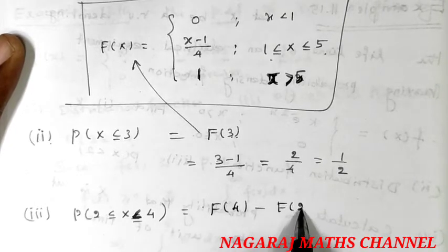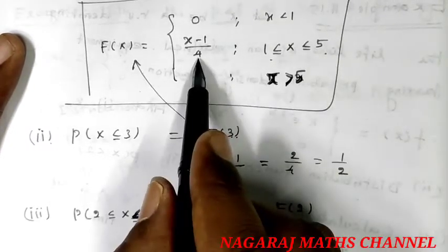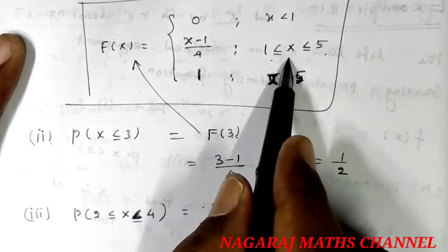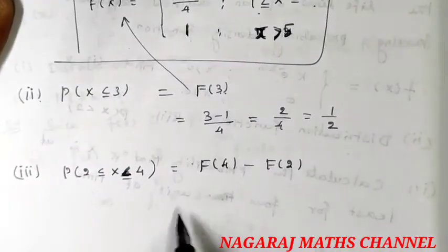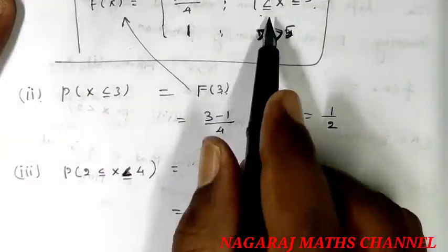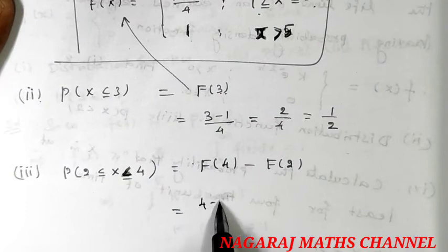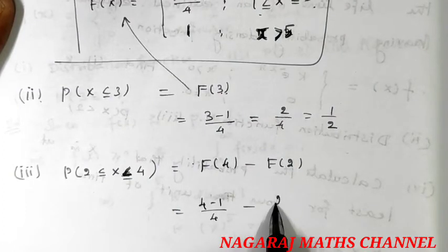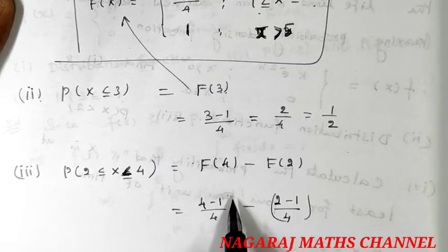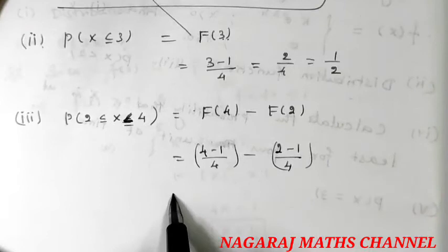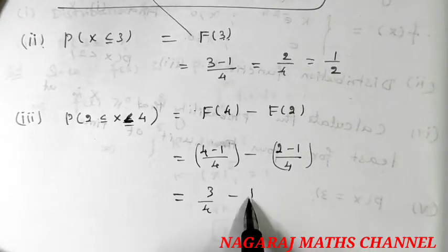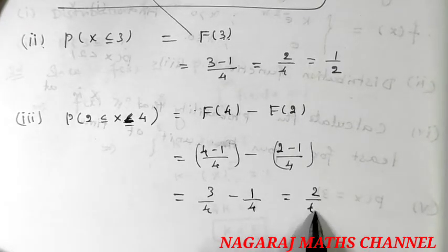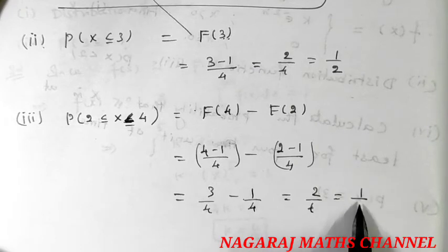For P(2 < X < 4), this is F(4) minus F(2) = (4 − 1)/4 minus (2 − 1)/4 = 3/4 minus 1/4, which equals 2/4 = 1/2.